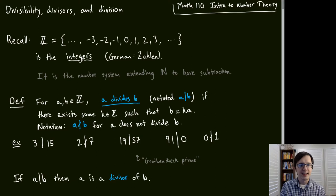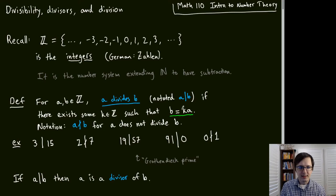The definition: A divides B, when A and B are integers — notated A | B — is that there exists a solution to the equation B = KA, where K is some integer. When A does not divide B, the notation is A with a slash through the bar over B.